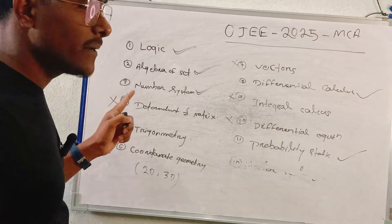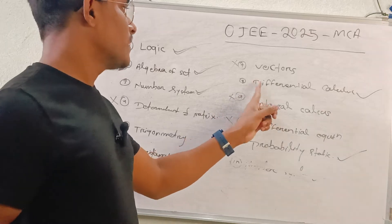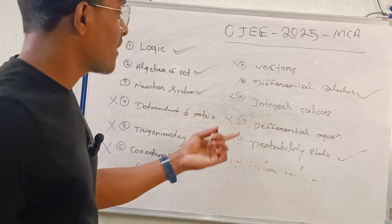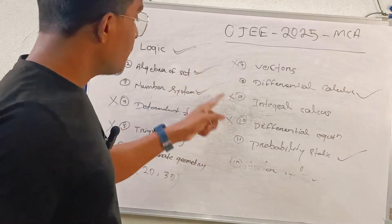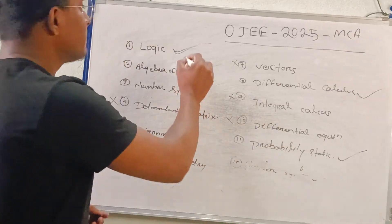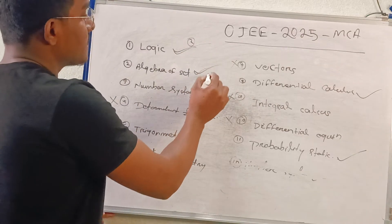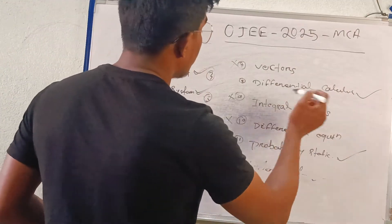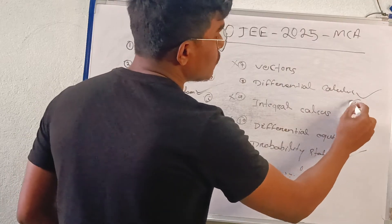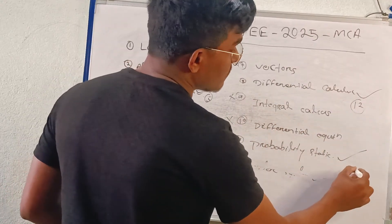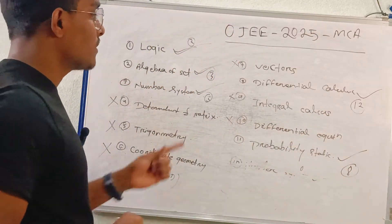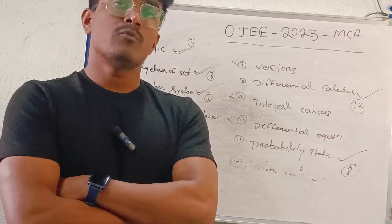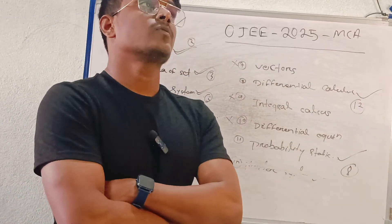We will try to cover Mathematics, Differential Calculus, and Probability Statistics in this video series. Algebraic Set — minimum 3 questions. Number System — minimum 5 questions. Differential Equations — I think around 4K questions.